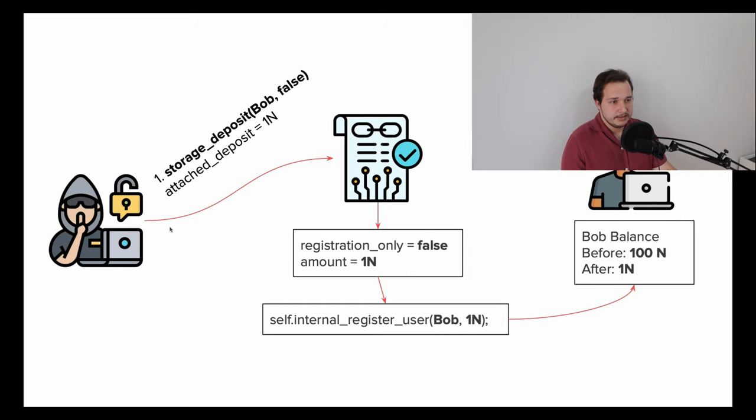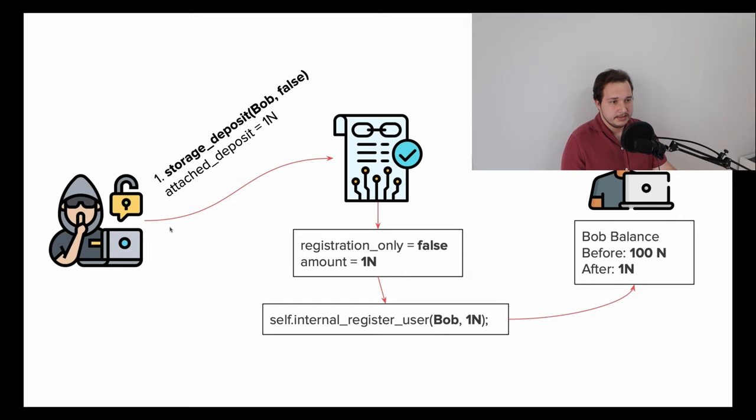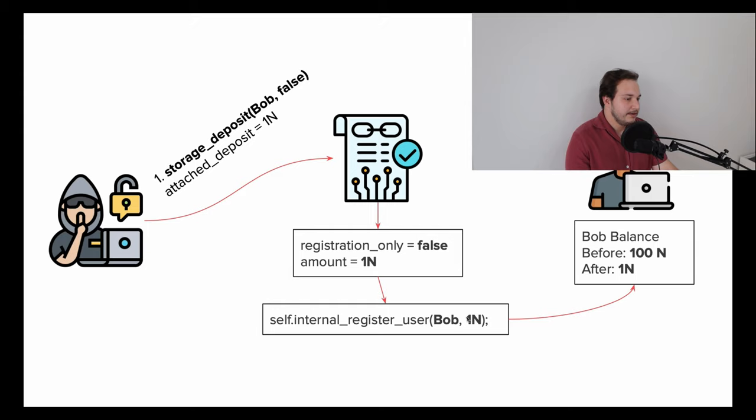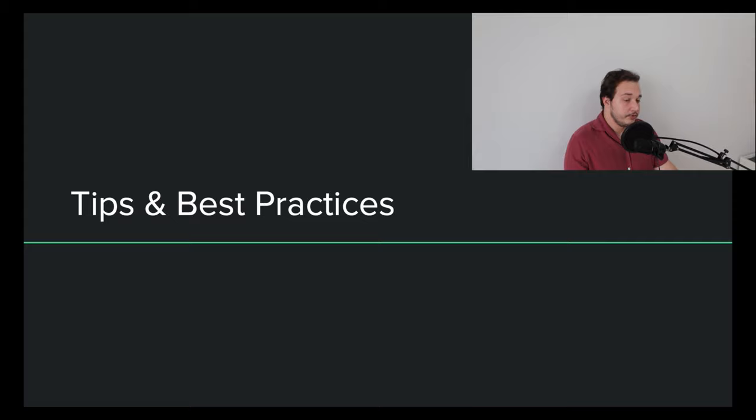As you can see, a malicious actor can call storage_deposit with Bob's account, set registration_only to false, and attach just 1 NEAR. If Bob's storage deposit was previously 100 NEAR, after this attack Bob's storage deposit is overwritten to just 1 NEAR.